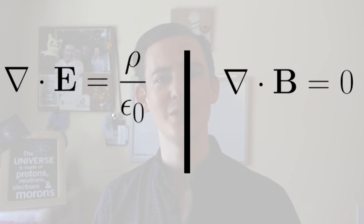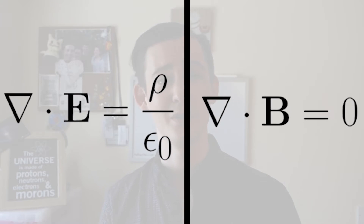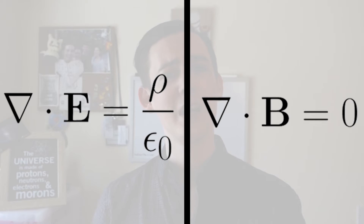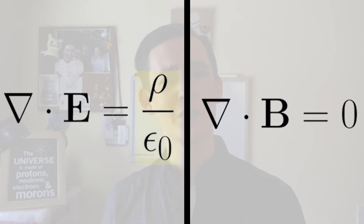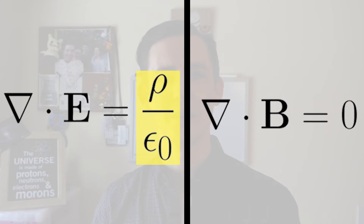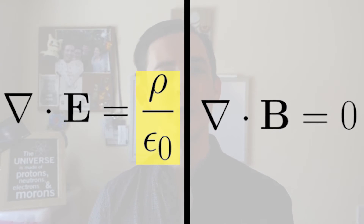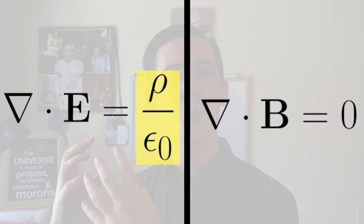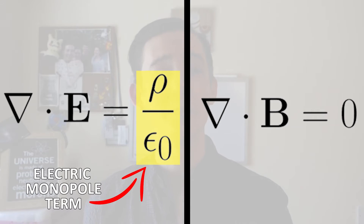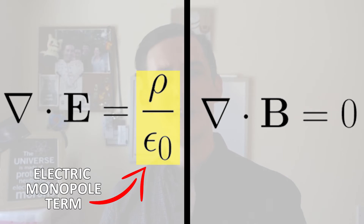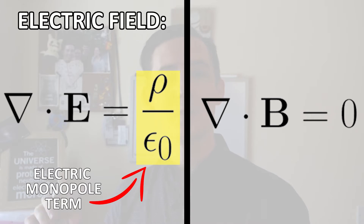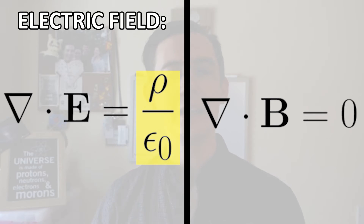Let's just look at the other two equations and notice what's different about them. On the right hand side of this first equation, we have this complicated looking term, but it really doesn't matter what all these symbols represent — we just need to know that this term corresponds to electric monopoles, such as electrons. This whole equation is about the electric field, and we know this because there's a big capital E in the equation for electricity.